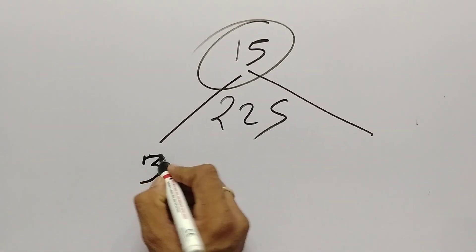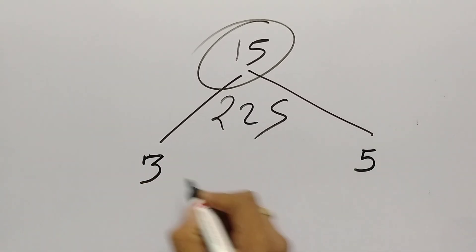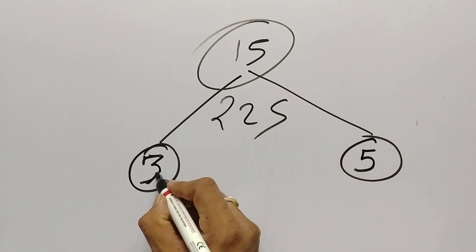To check 15's divisibility, we need to make a simple tree. Here we write 3, here we write 5. 3 times 5 is 15.